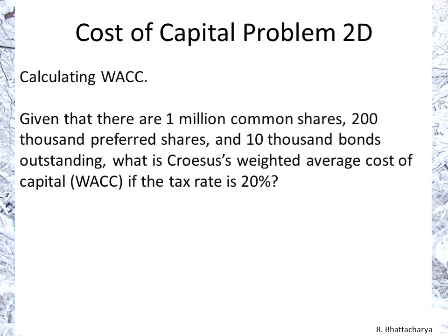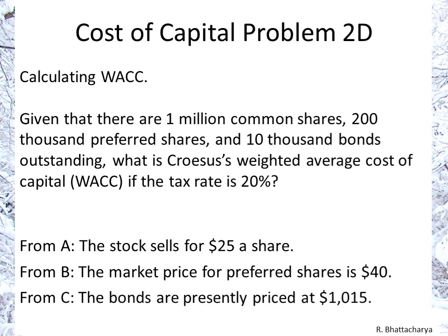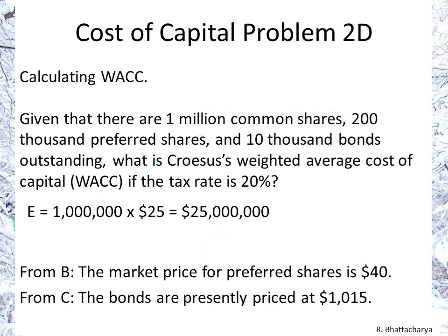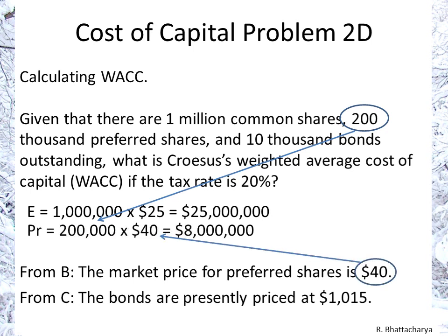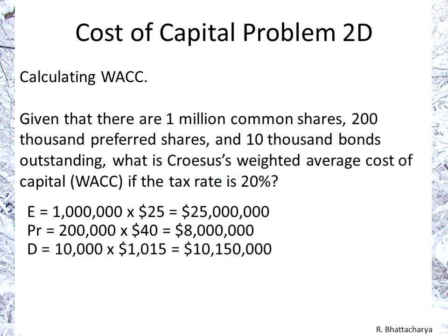Taking a look at our numbers, we recall the values from the previous parts. From A we had the values of the shares, from B the values of the preferred shares, and then also the values of the bonds. We have common shares at $25 a share, worth $25 million. We have 200,000 preferred shares costing $40 each, so they're $8 million. And then we have 10,000 bonds at $1,015 each, for a total of $10.15 million for the bonds.